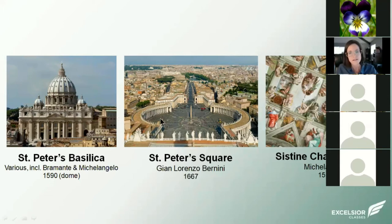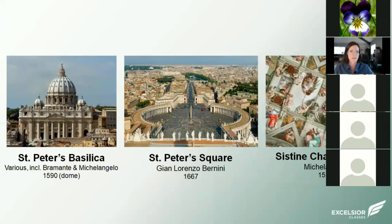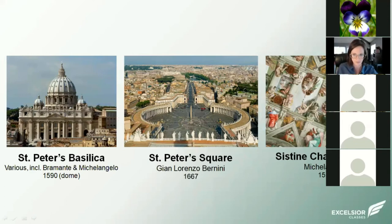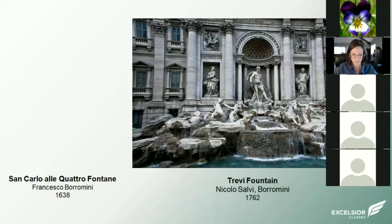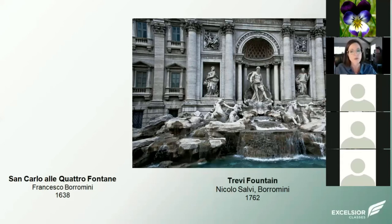Michelangelo's dome is a little more pointed than the hemispherical Pantheon dome, which really garners attention. The famous Sistine Chapel ceiling is right next to St. Peter's — including the Creation of Adam, where God stretches out his finger toward Adam. These are examples of the high Renaissance. We don't see much of the early Renaissance in Rome; that was really in Florence.